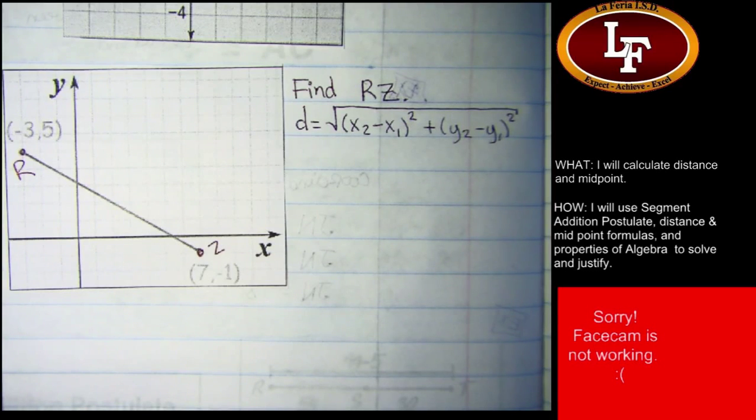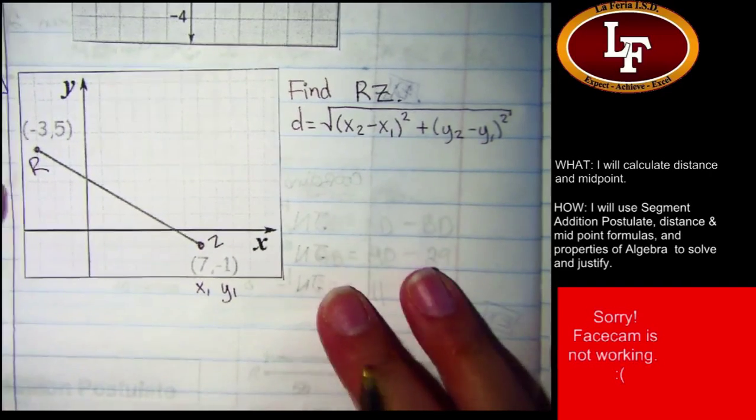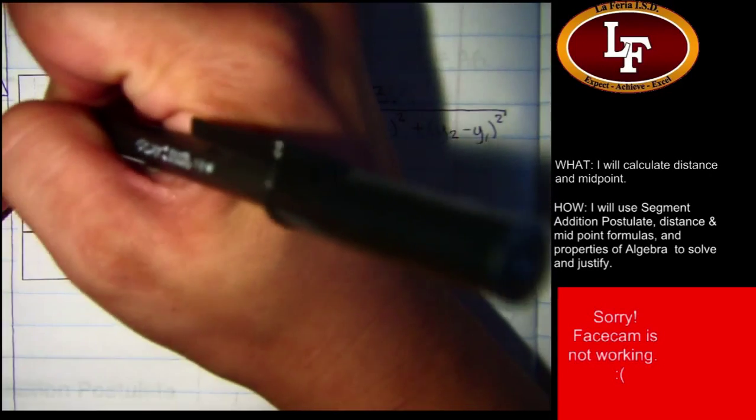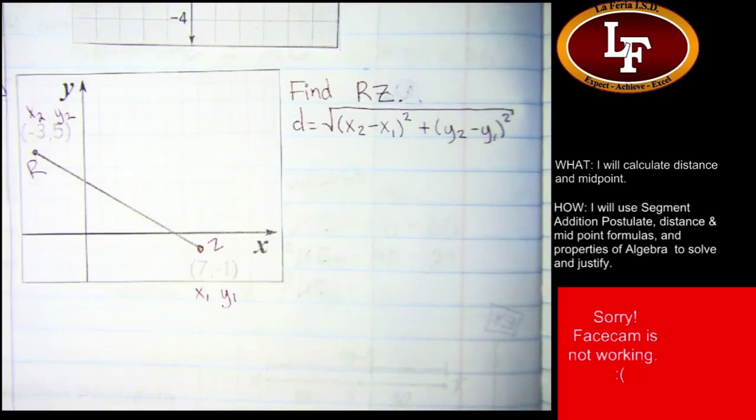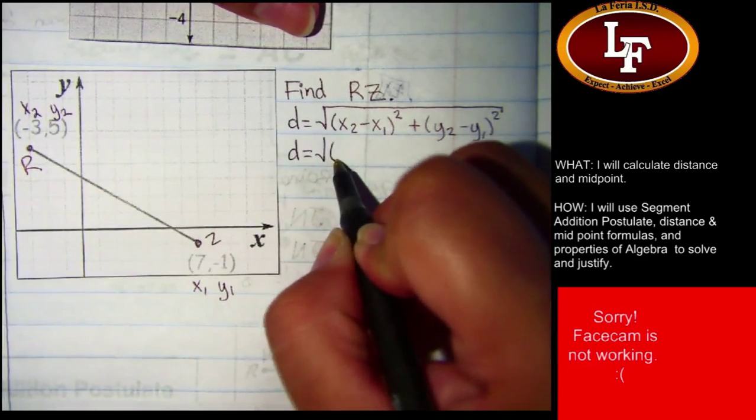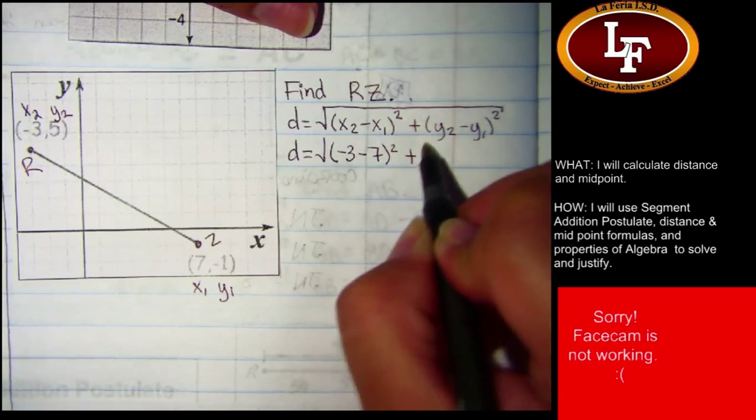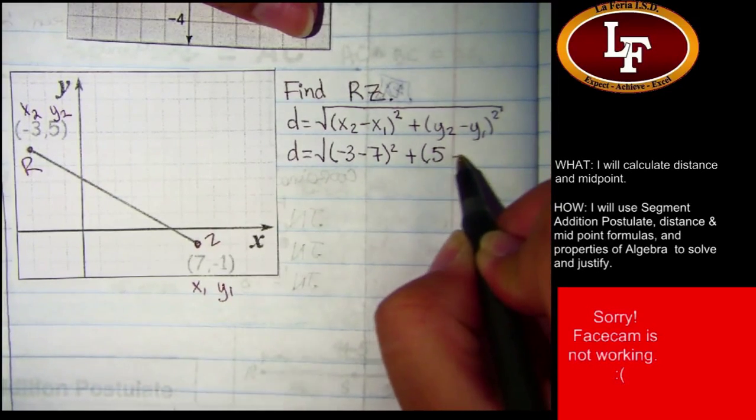Now let's do our substitutions. Which point is point x1, y1? Hint, it doesn't matter. Just pick one. Z. He wants Z to be x1, y1. You were free to make that choice, but now that we have made that decision, that forces us to have R be x2, y2. We're free to make our choice, but once we make our choice, we're locked in. Do your substitutions now. x2, x1, y2, y1.